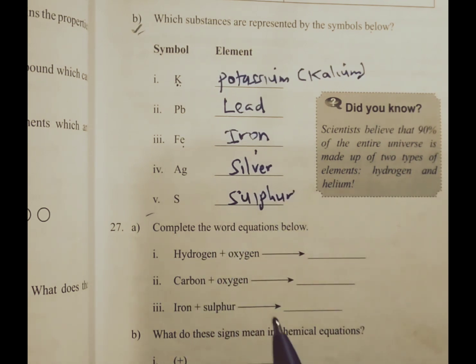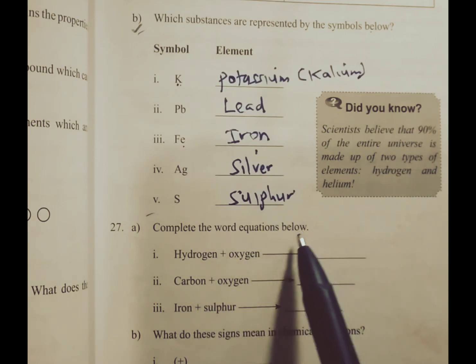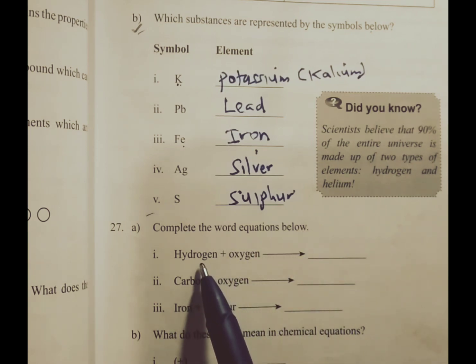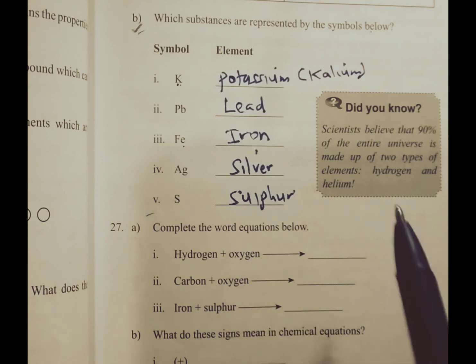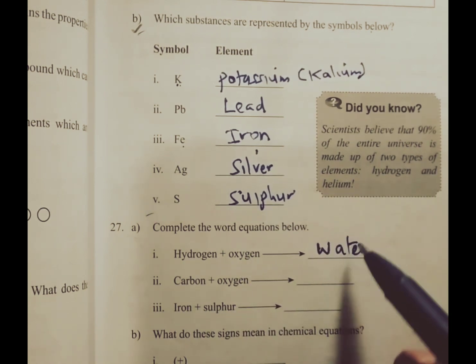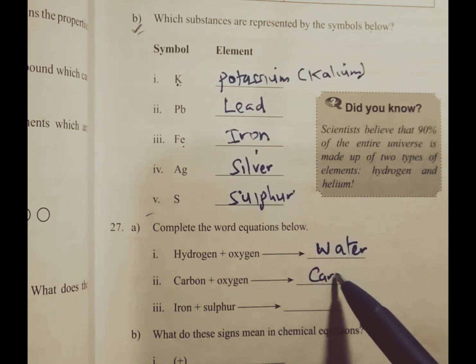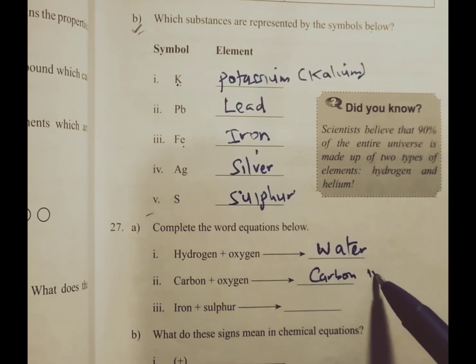We move to the next question. Complete the word equations below. We have hydrogen combining with oxygen to give us water. Carbon plus oxygen gives us carbon dioxide.